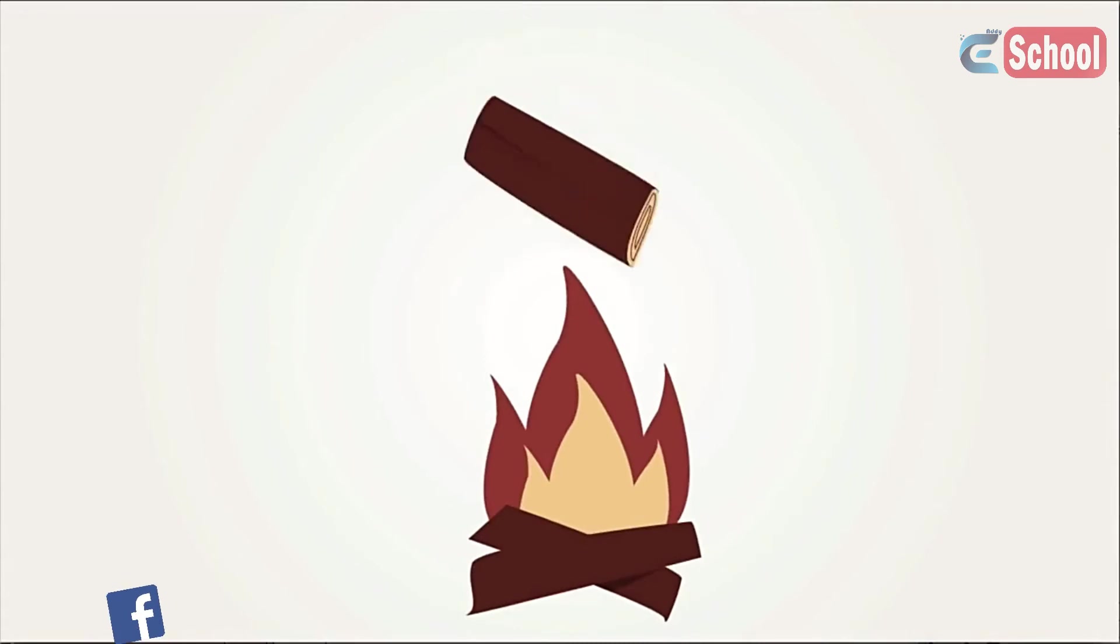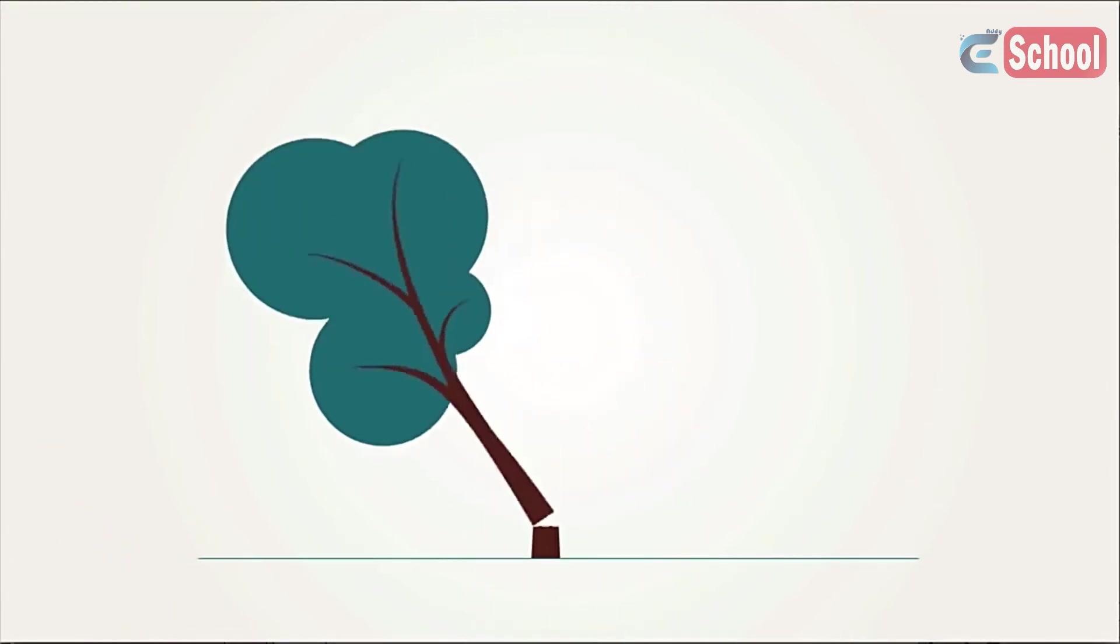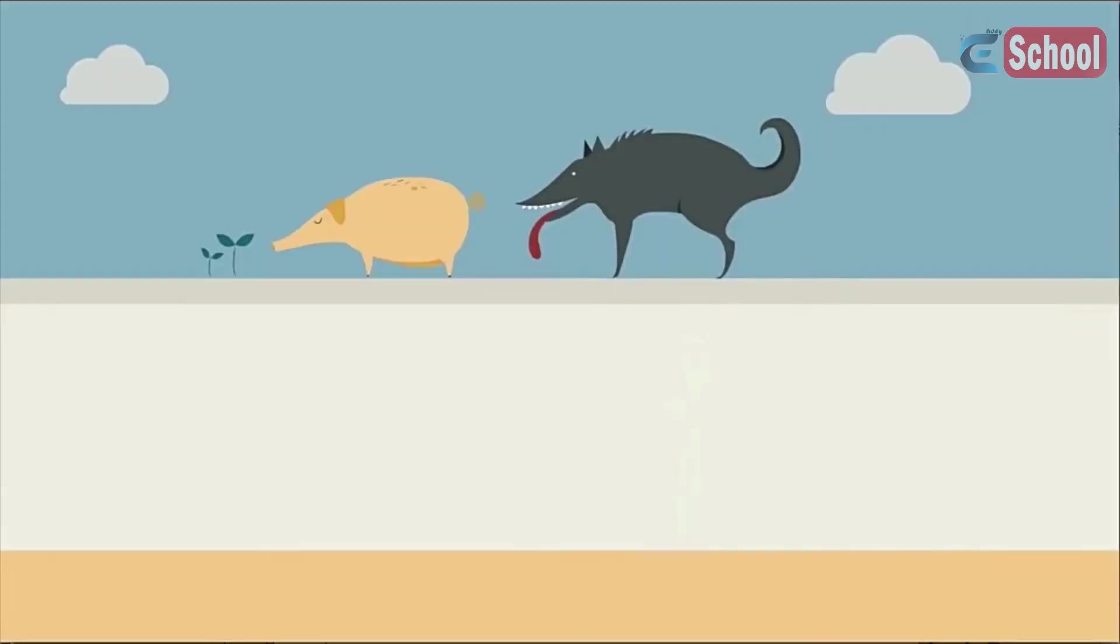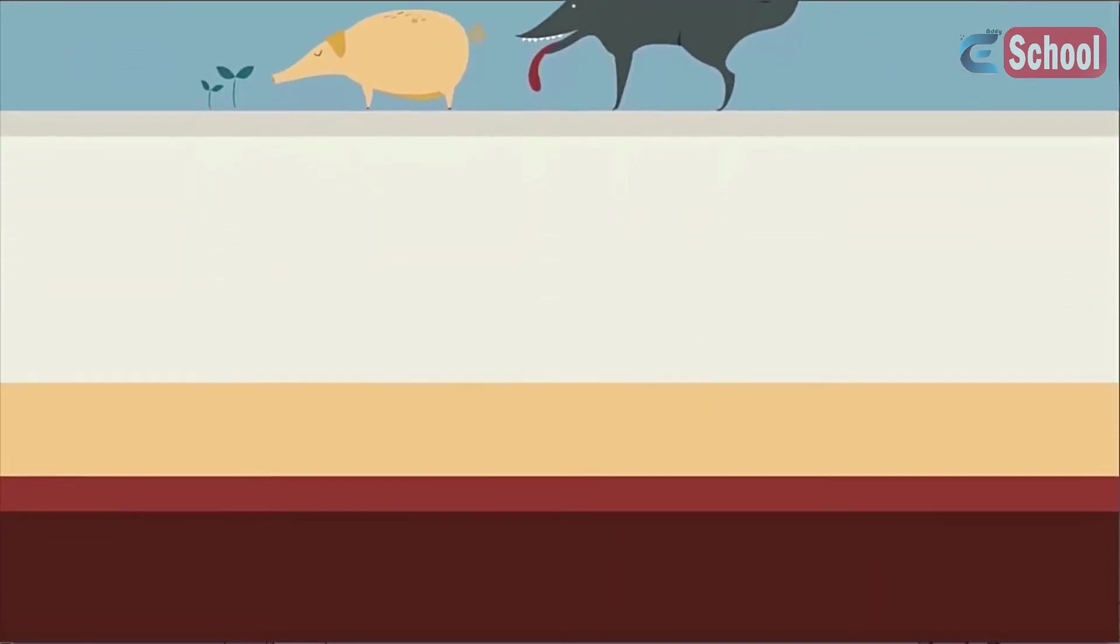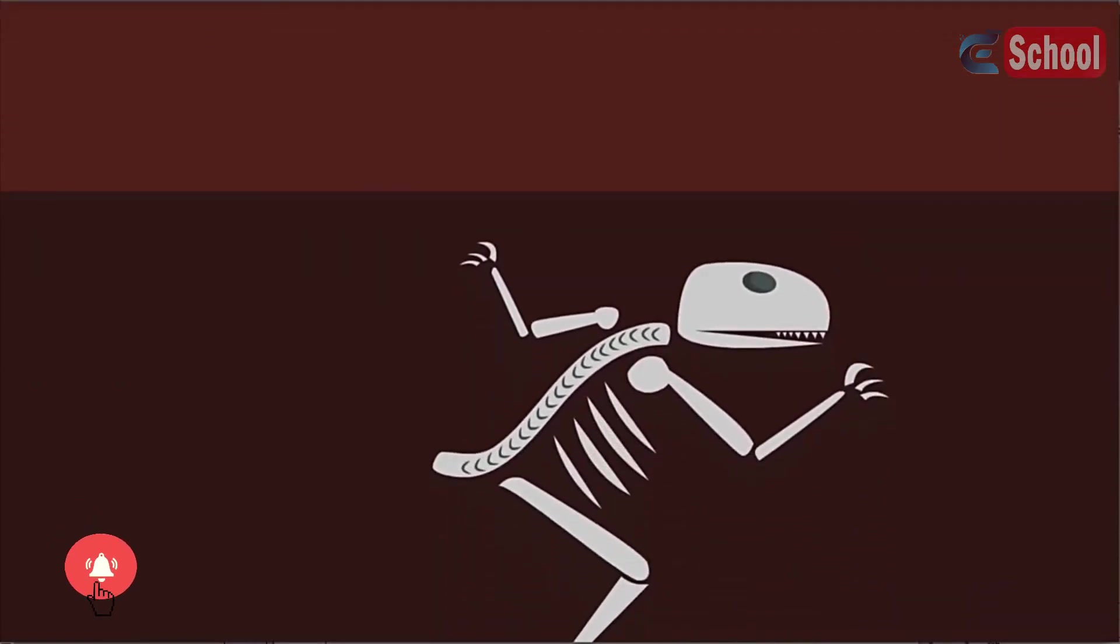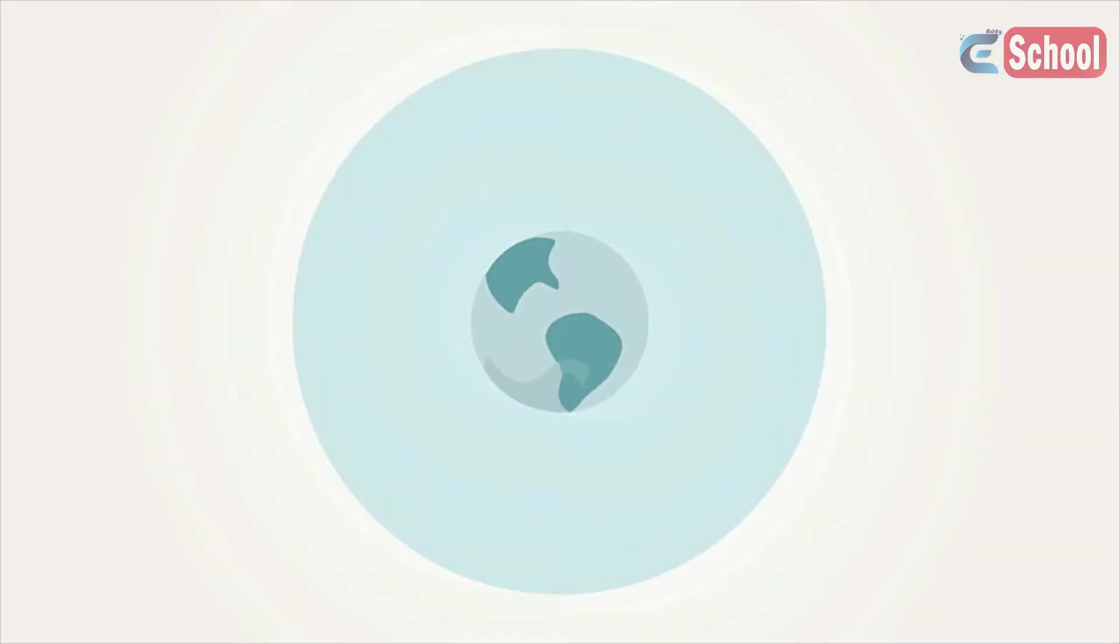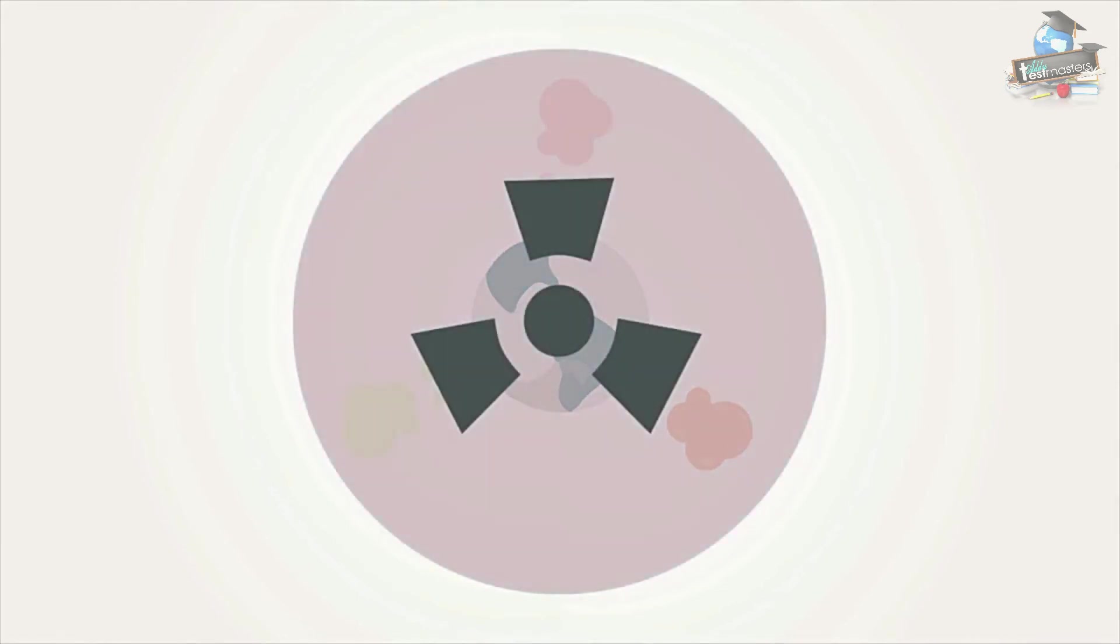Even burning wood doesn't contribute to the enhanced greenhouse effect as long as the trees you cut down are replanted. However, the carbon in fossil fuels has remained trapped underground for hundreds of millions of years so it is extra carbon that's been added to the natural cycle. We are also throwing away other gases into the atmosphere which help trap infrared radiation and so also enhance the natural greenhouse effect.